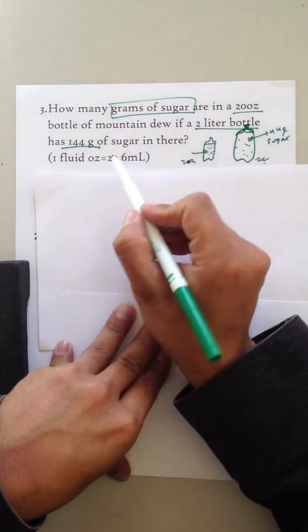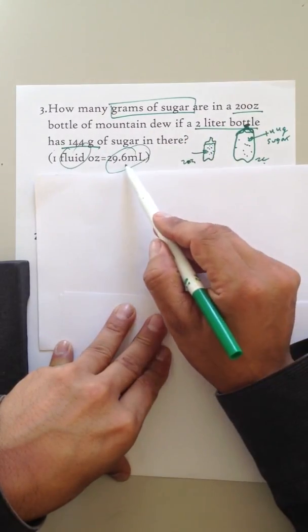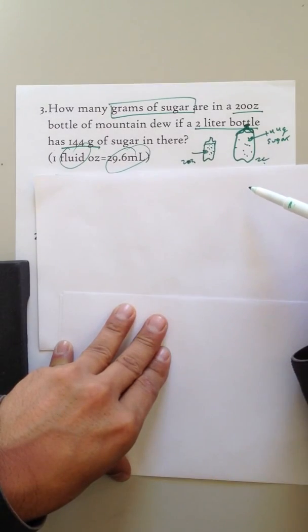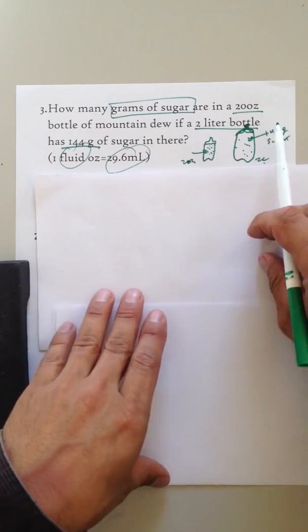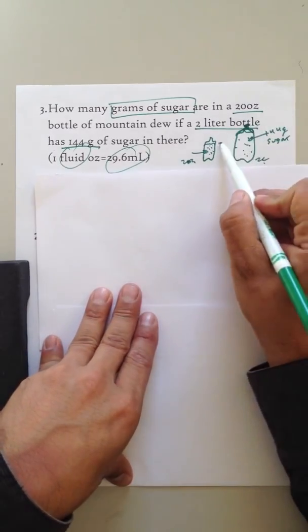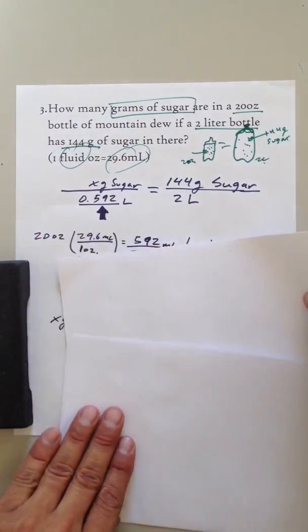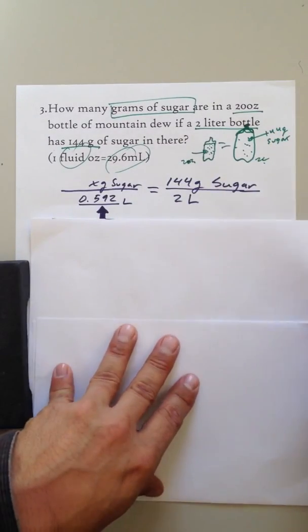Okay, 20 ounces. We have a conversion, too, that 1 ounce is 29.6 milliliters, so that's nice. We could convert from ounces to milliliters, and then milliliters to liters. So that's our strategy. We've just got to find a way to compare these because the ratios are the same of sugar to water. So here it is.